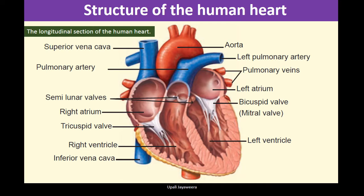The arteries and veins include the aorta, pulmonary artery, pulmonary veins, superior vena cava, and inferior vena cava. There are also valves: the bicuspid valve, tricuspid valve, and semilunar valves.